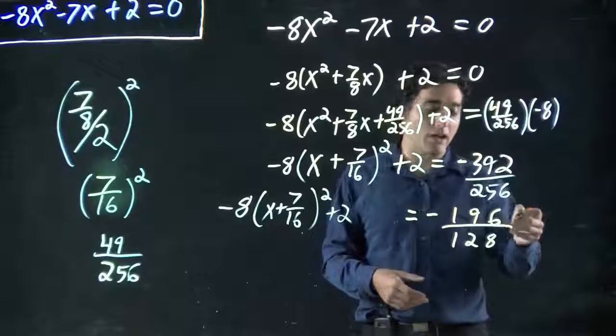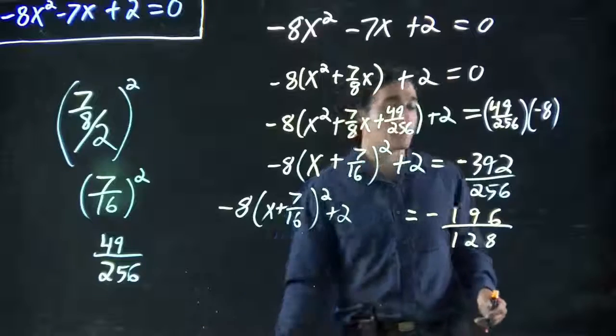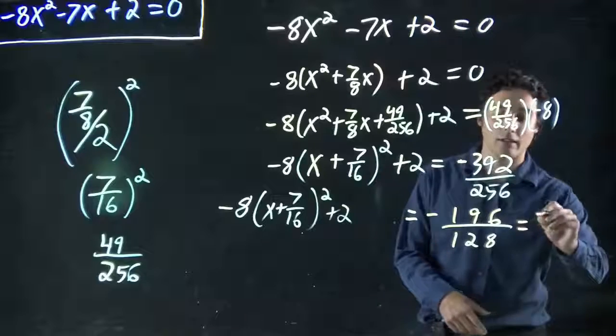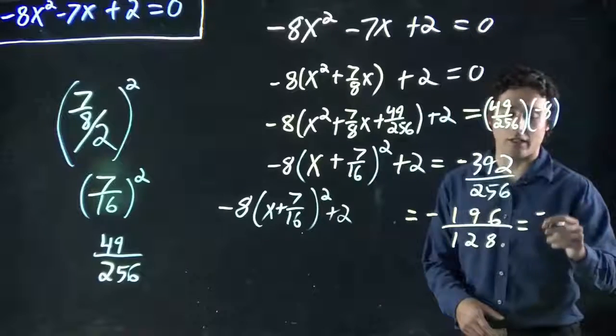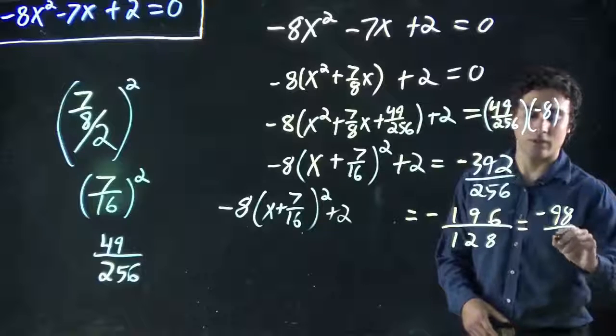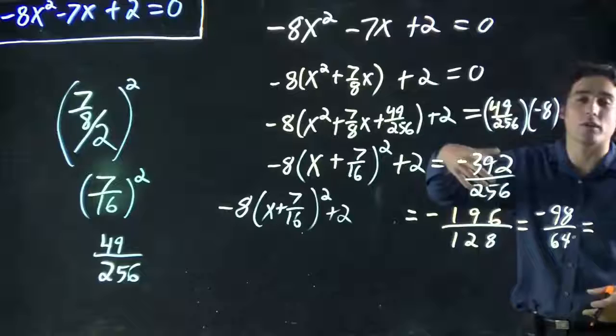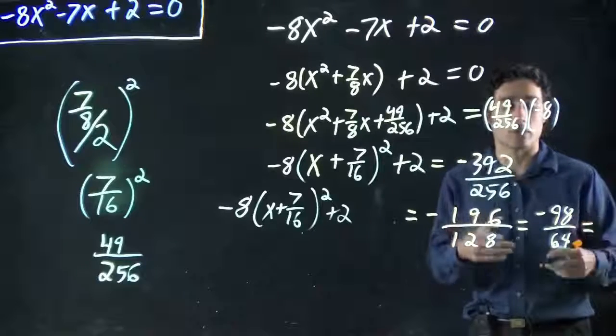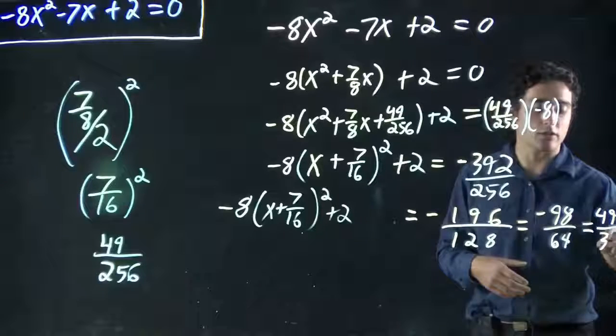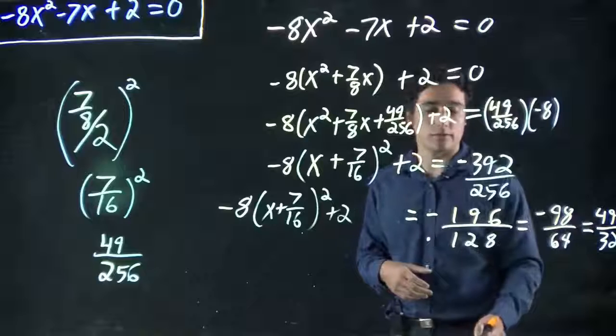And if we wanted to, we could have divided both top and bottom by 2 to reduce this down a bit. We're going to divide top and bottom by 2. We've got minus 196 all over 128, which can be reduced even further. You can keep dividing by 2 until you get reduced as far as it can go. And in our case, minus 196, so this becomes 98, this becomes 64. Can keep reducing, keep dividing by 2. 49 over 32. And really, that should be as far as we can reduce it.